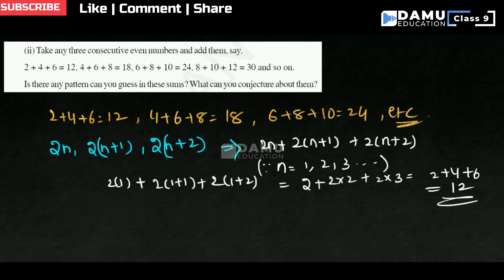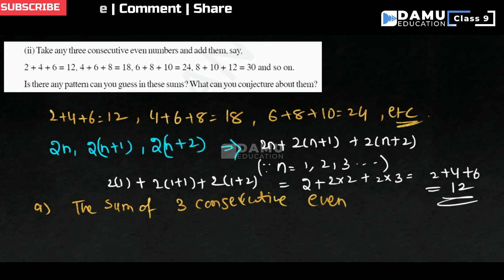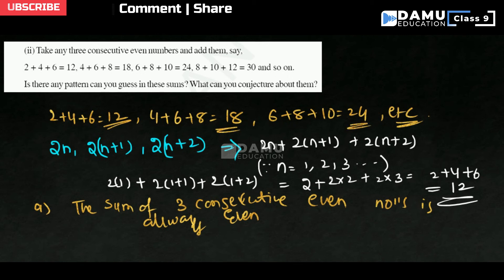So, what are the conjectures you can make? The sum of any 3 consecutive even numbers is always even. The sum of 3 consecutive even numbers is always even — because 12, 18, 24 are all even numbers.